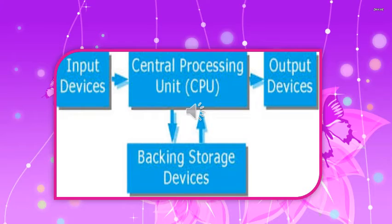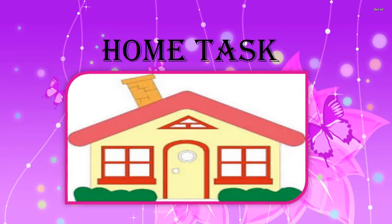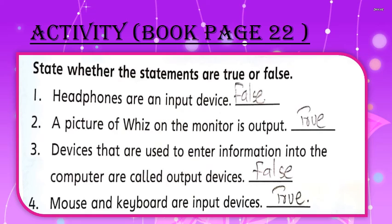In this slide I am showing you the computer functions: first we enter data with the help of an input device, then the computer processes it with the help of the CPU — also called the brain of the computer. The CPU also helps to store our data and documents. Then we get output with the help of the processing device and different output devices. I hope you understand about data processing, the device used in data processing, and the basic components of the CPU.